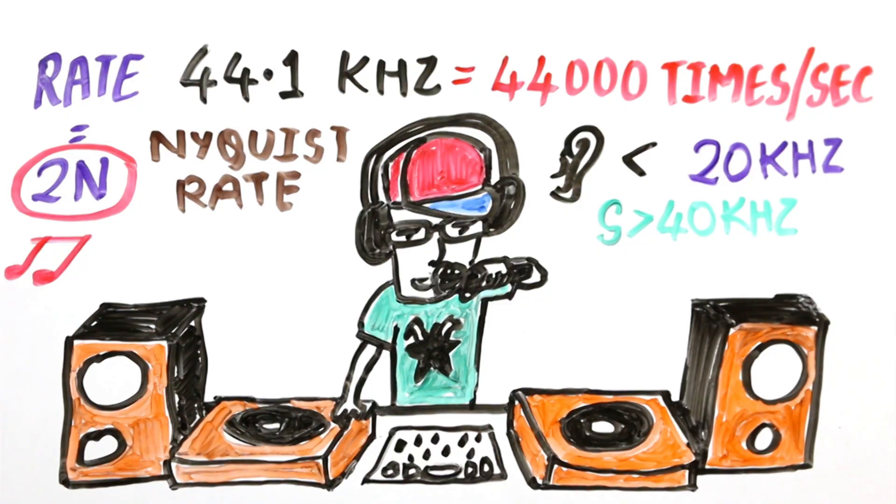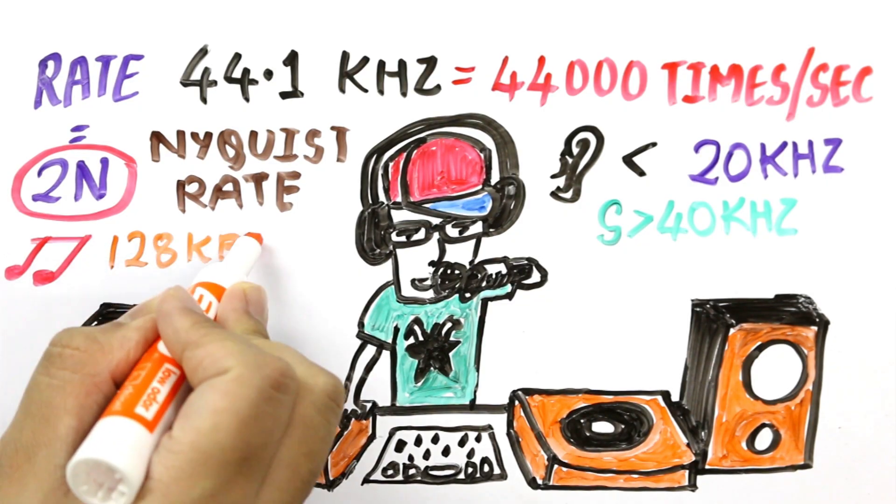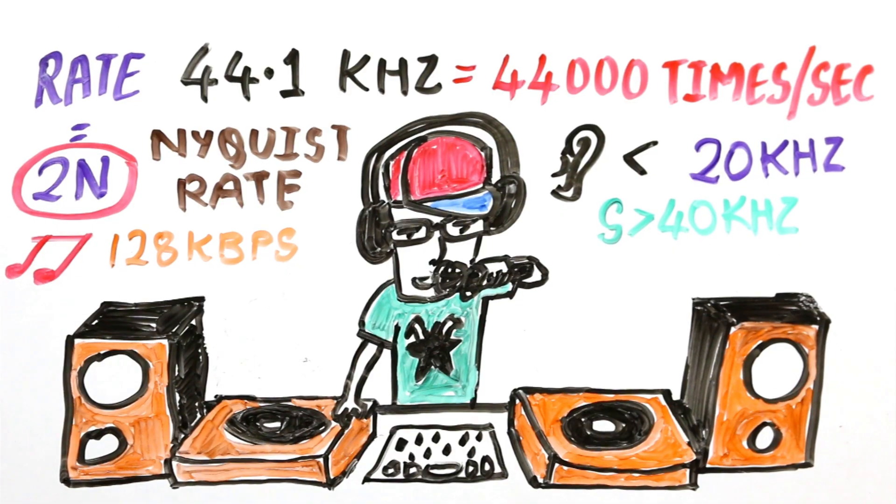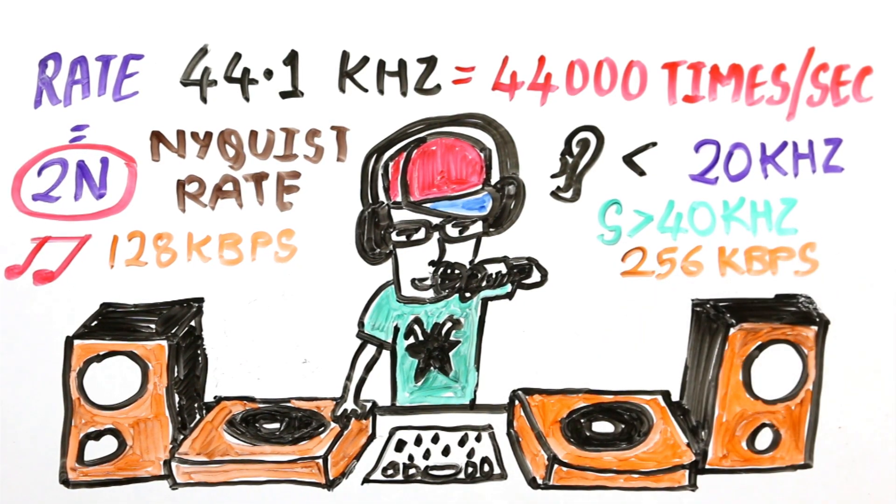The typical bit rate for MP3 tracks is around 128 kbps, 128,000 binary digits or bits per second, though higher quality tracks have a bit rate between 128 kbps and 256 kbps.